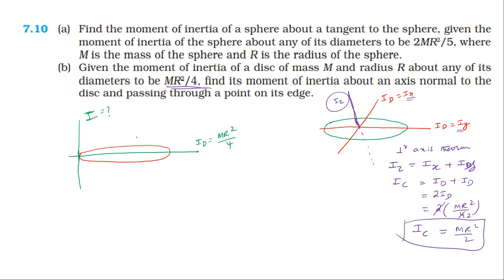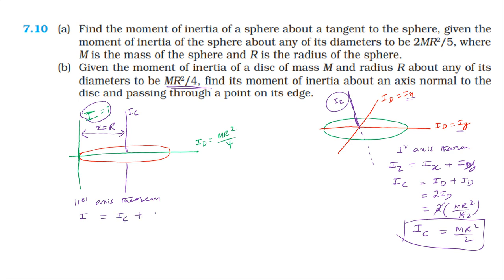Now we find the moment of inertia about an axis passing through the edge and perpendicular to the plane of the disk. The axis through the edge and the axis through the center (both perpendicular to the plane) are parallel. The distance between these two parallel axes is r. According to the parallel axis theorem, the moment of inertia about an axis equals the moment of inertia about the center of mass plus the product of mass and the square of the distance between the two parallel axes.